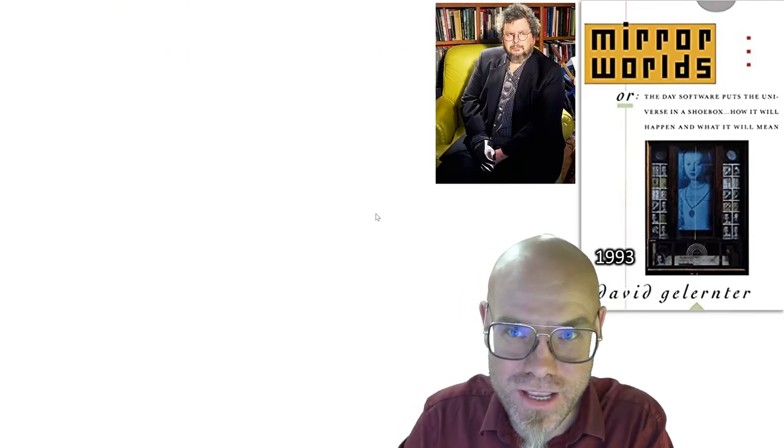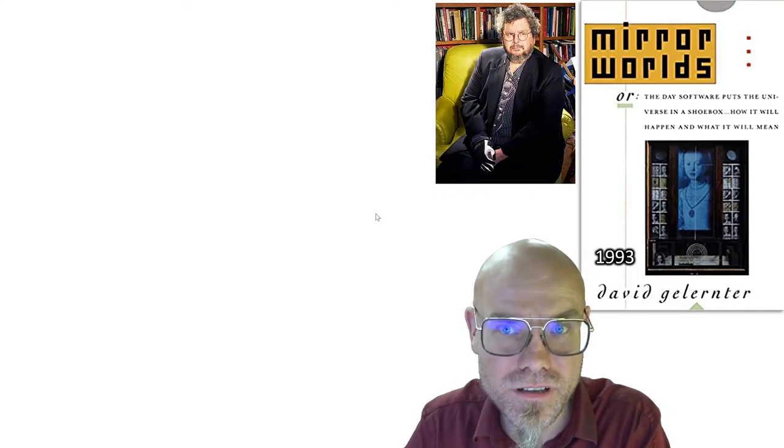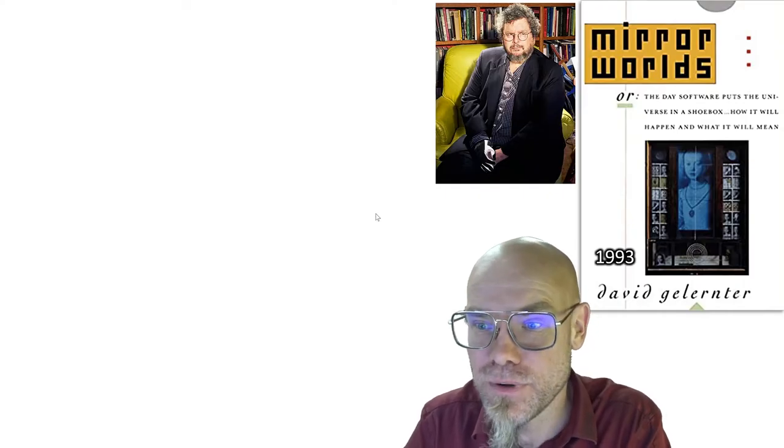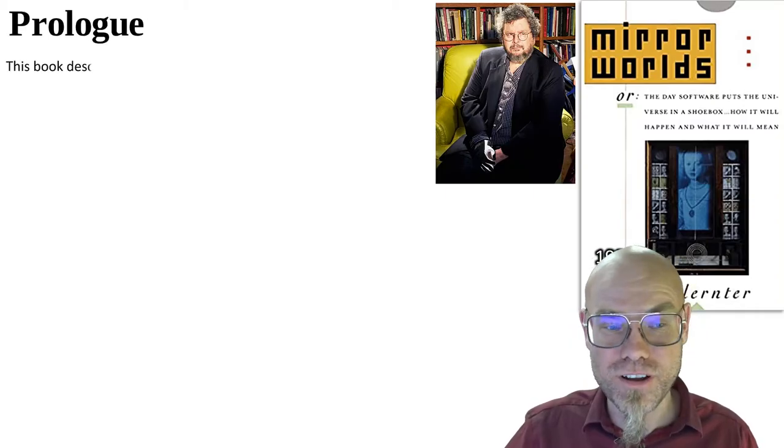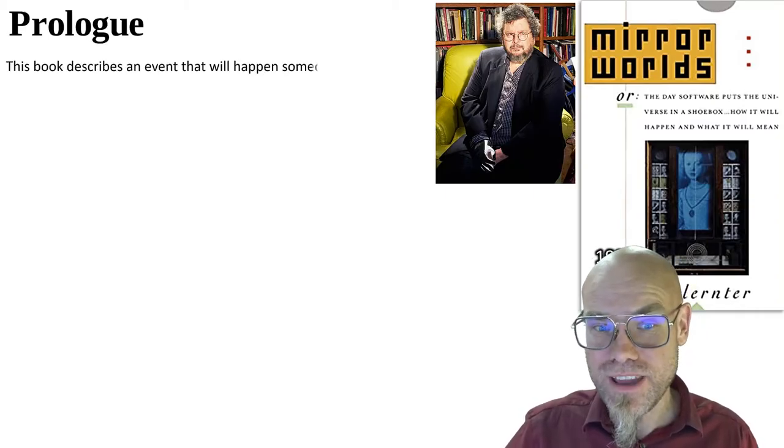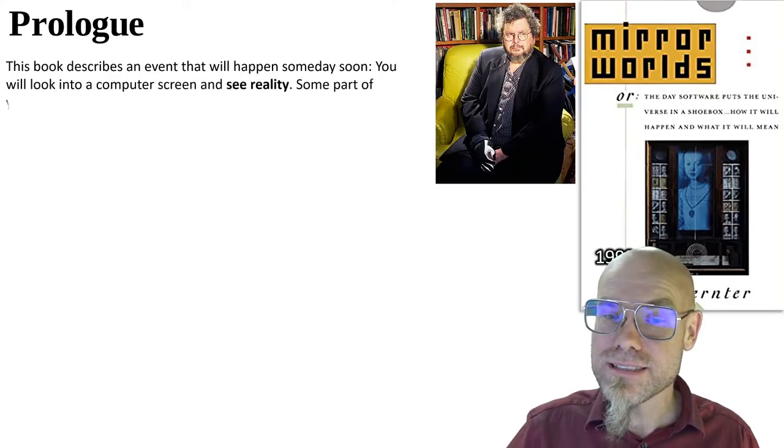In 1993, a very influential book has been published by David Gelernter, which is called exactly that, Mirror Worlds, or the day software puts the universe in a shoebox. How it will happen and what it will mean. So that was in 1993. And what Gelernter told us there in the prologue is, this book describes an event that will happen someday soon. You will look into a computer screen and see reality.